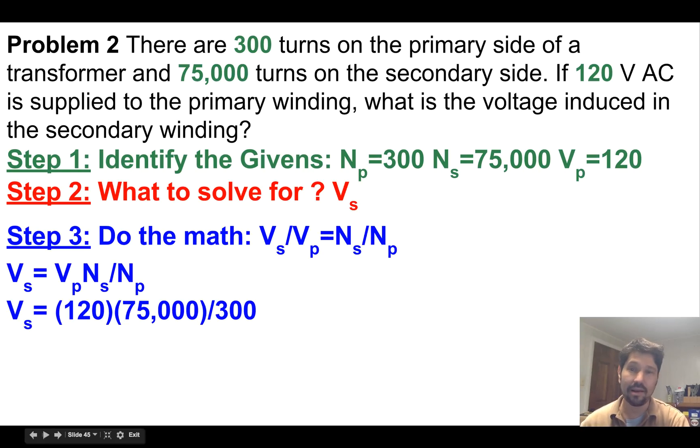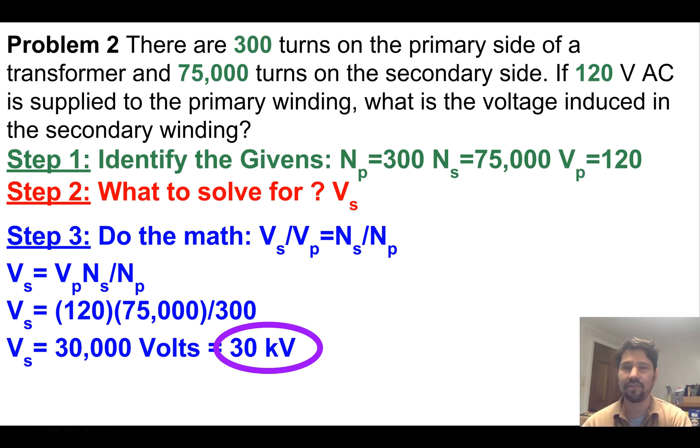I'll plug in 120 volts times 75,000 over 300 and that equals 30,000 volts. Maybe I'll be impressive and call that 30 kilovolts and circle it to make it easy for my teacher to find.